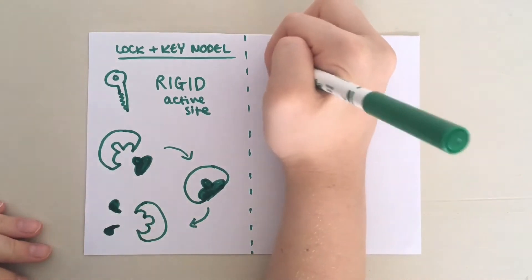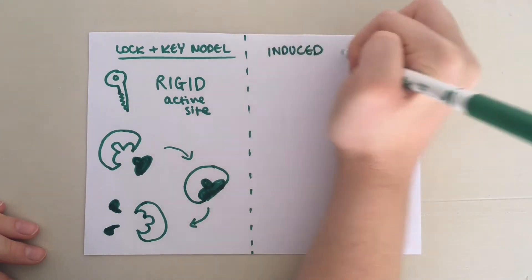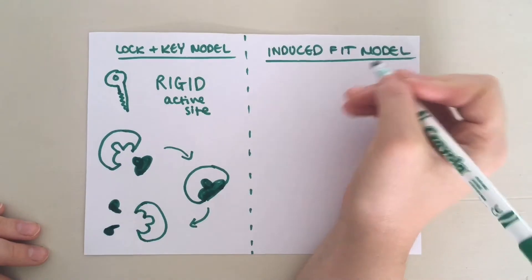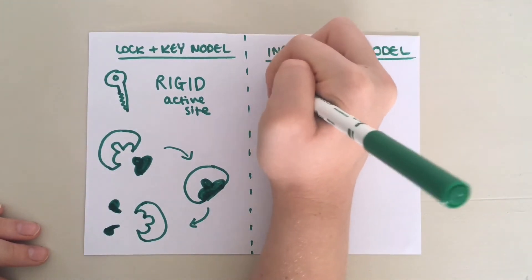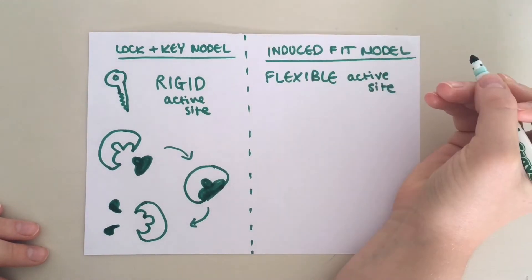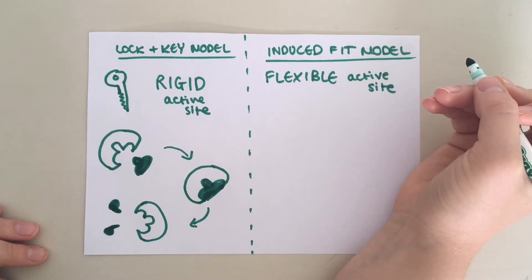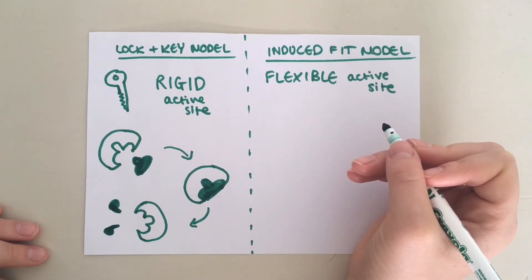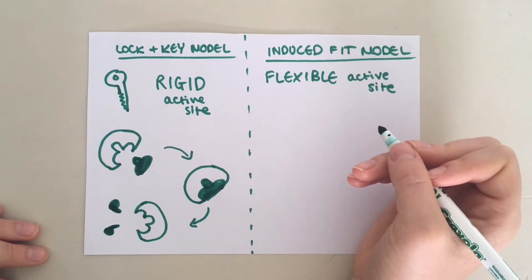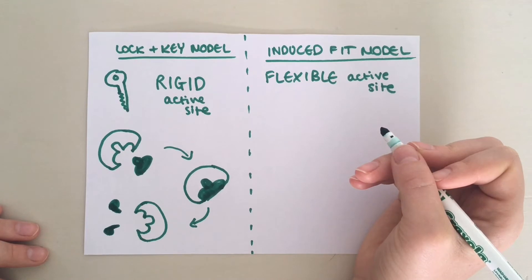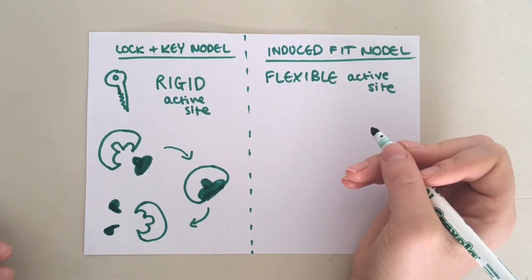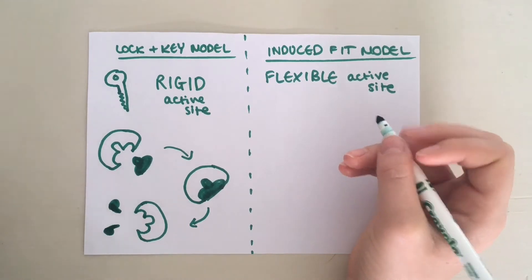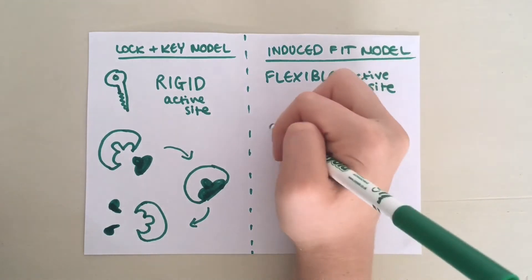However, more recently, the induced fit model has come about. This model suggests that the active site is flexible and only assumes its catalytic conformation after the substrate molecules bind to the site. After the product leaves the enzyme, the active site reverts to its original shape. The induced fit model helps to explain why enzymes are so specific and only bond to one particular substrate, because not only does the substrate have to be the right shape to fit into the active site, it must make the active site change in the right way as well. This is why the induced fit model is more widely accepted.